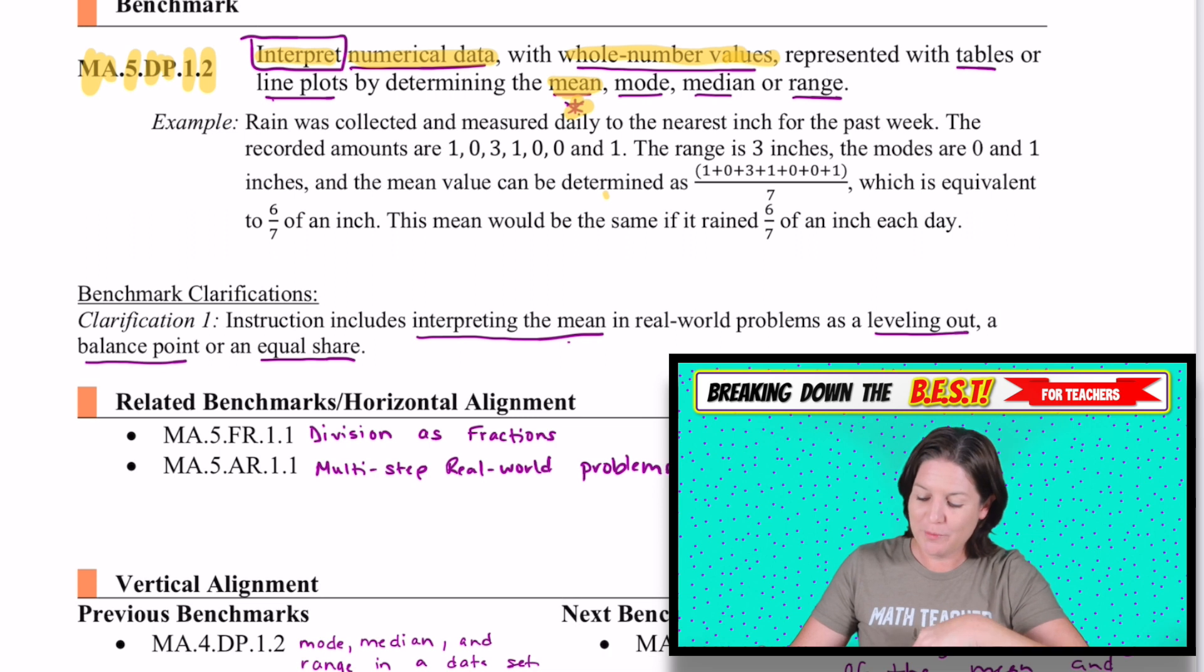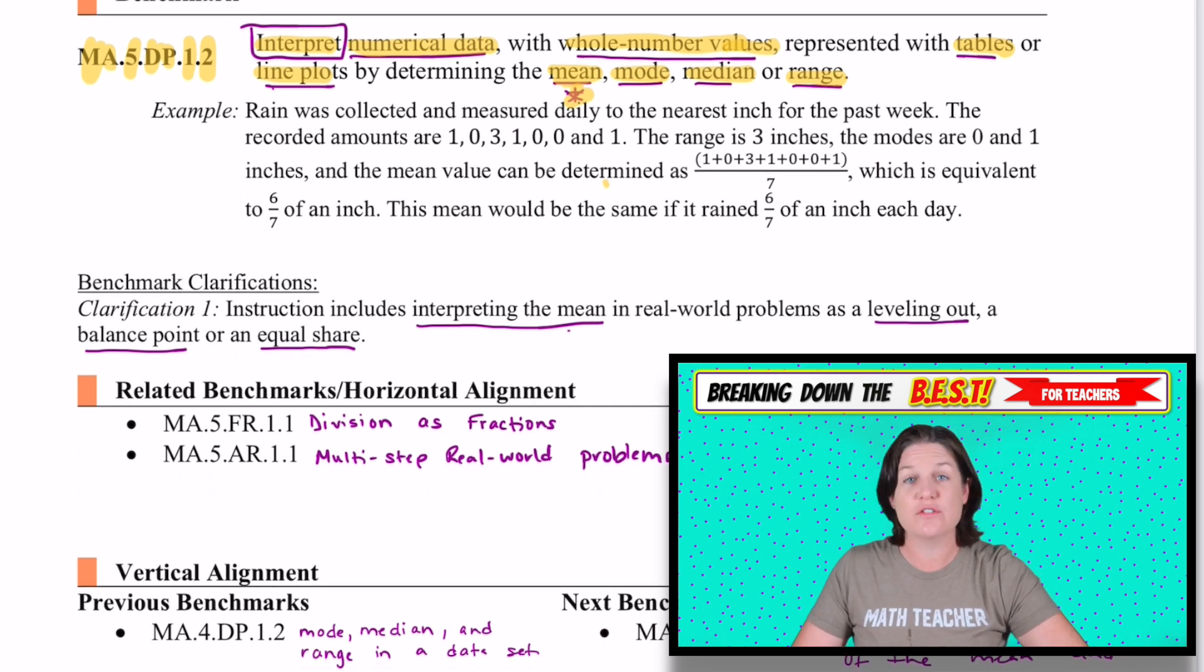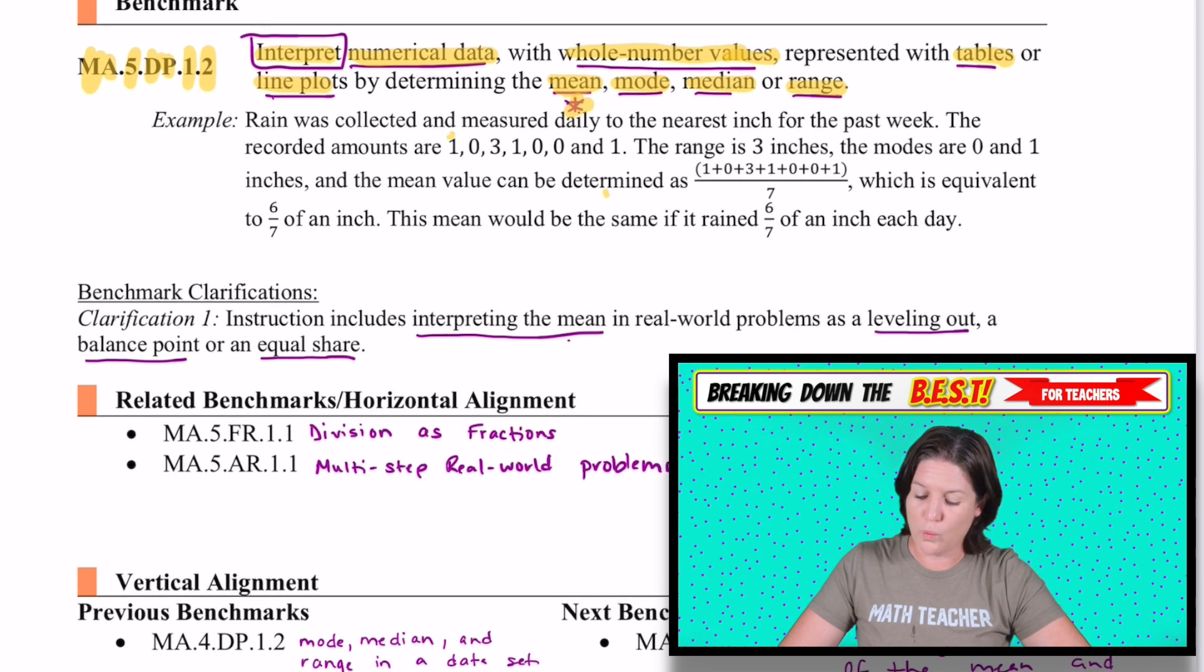So with whole number values represented with tables or line plots by determining the mean, that means the average, the mode, the median, and the range. All right, here's an example. It says that rain was collected and measured daily to the nearest inch for the past week. The recorded amounts are 1, 0, 3, 1, 0, 0, and 1.